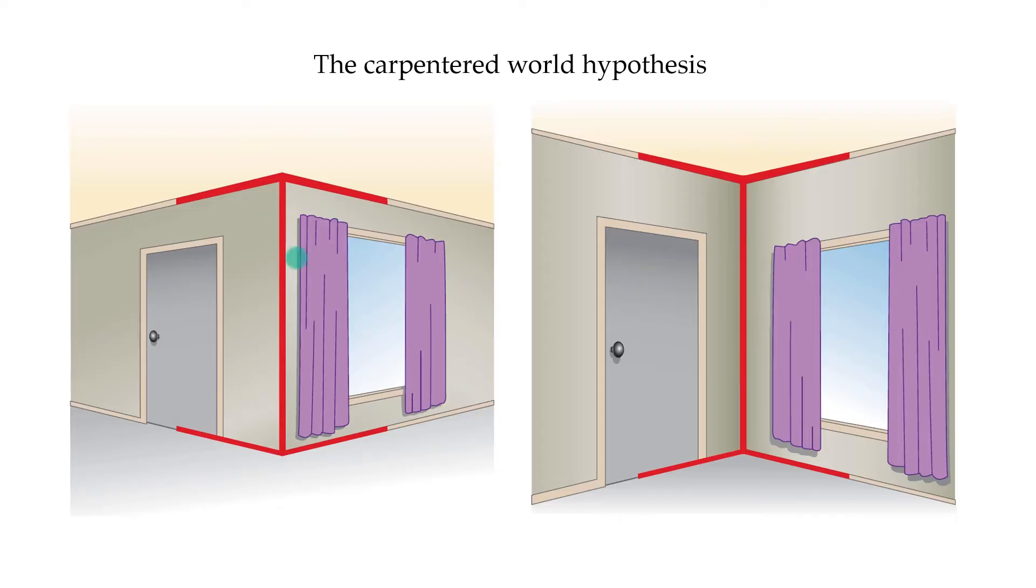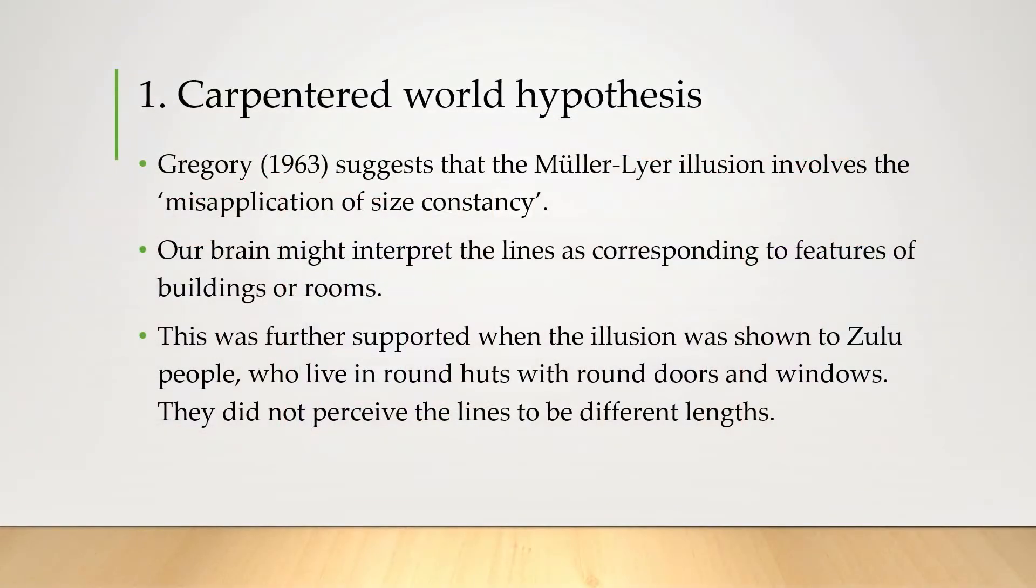This was further supported when the illusion was shown to Zulu people who live in round huts without many straight lines and edges. They didn't perceive the lines to be of different lengths.